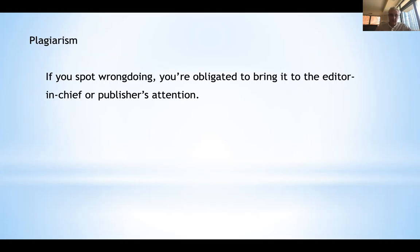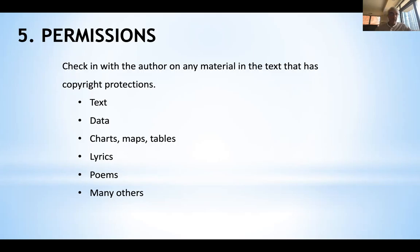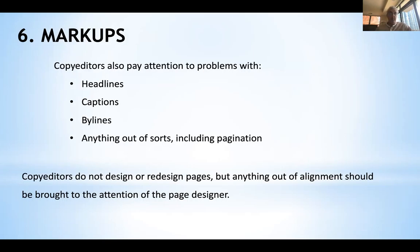The fifth principle has to do with permissions. Check with the author on any material in the text that has copyright protections — or if you think it might. That can refer to borrowed text, data, charts, maps, tables, lyrics, poems, and many other things. The sixth and final principle has to do with markups. Copy editors also pay attention to problems with headlines, captions, bylines, and anything out of sorts, including pagination. If you see a page that doesn't quite align, it is not your job as a copy editor to design or redesign pages, but anything out of alignment should be brought to the attention of the page designer.